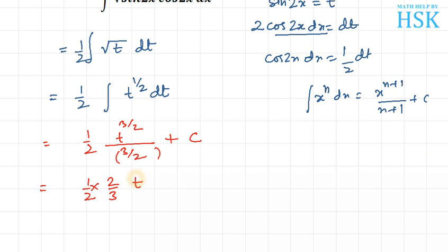The 2 and 2 cancel out. We had substituted t = sin(2x), so my final answer would be 1/3...